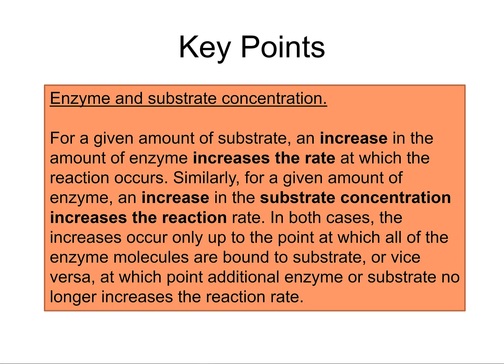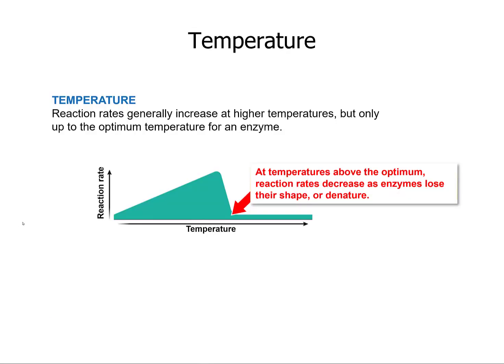With temperature, reaction rates generally increase with higher temperatures, but there is an optimal temperature. As we approach beyond that optimum, it can denature the enzyme — it is a protein. Think about temperature as shaking: if I take something with delicate parts and start shaking it, at some point it will start to fall apart. That's the optimum up here — that's about the best you're going to get temperature-wise — and then it drops off.